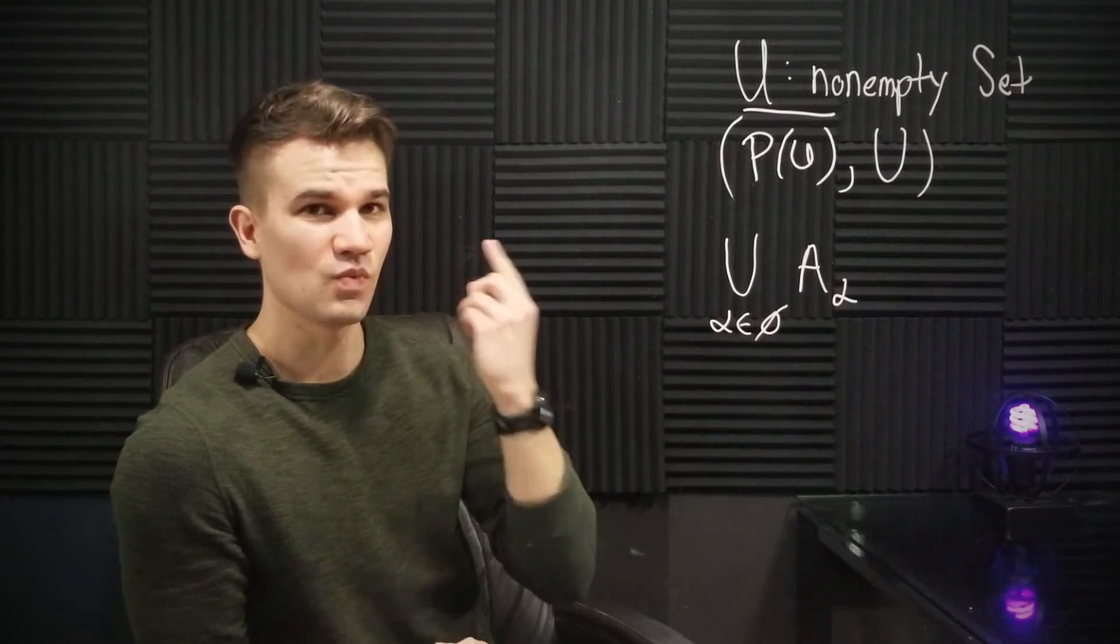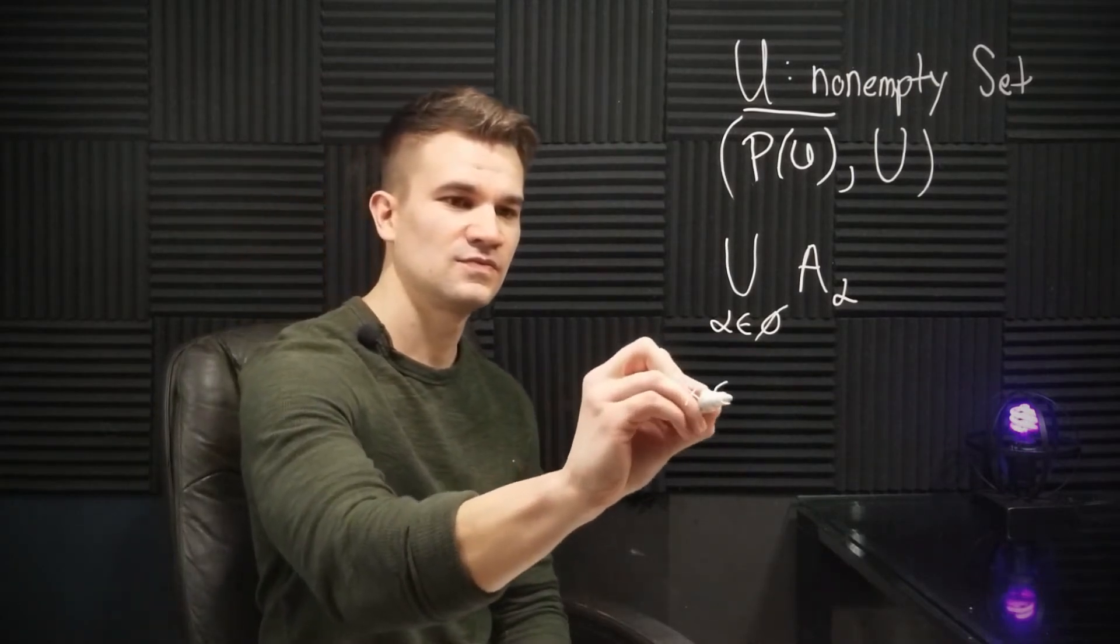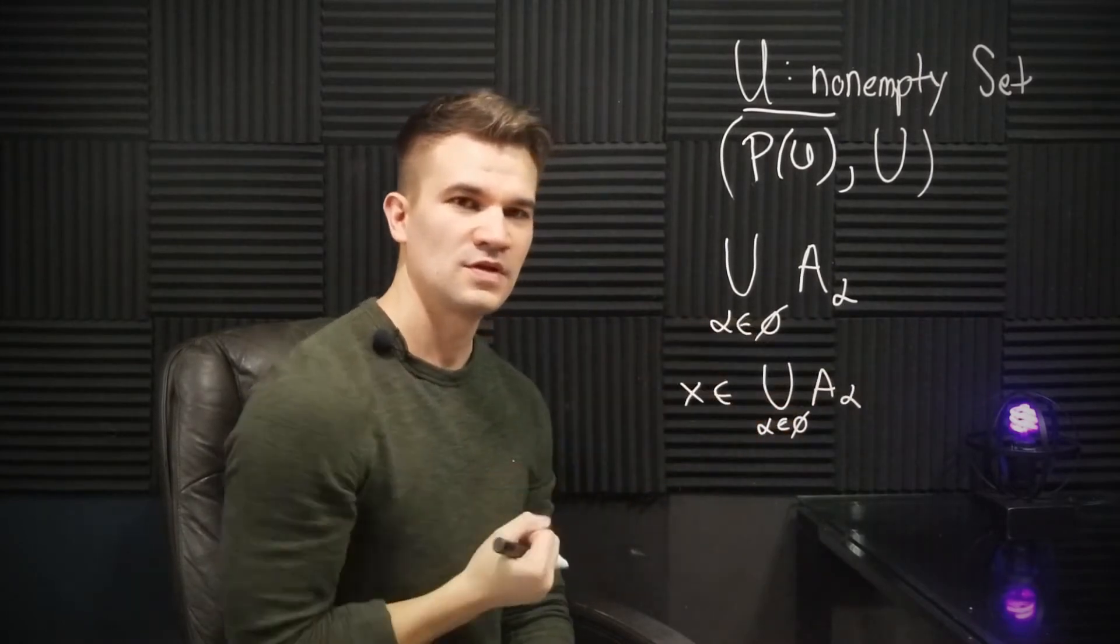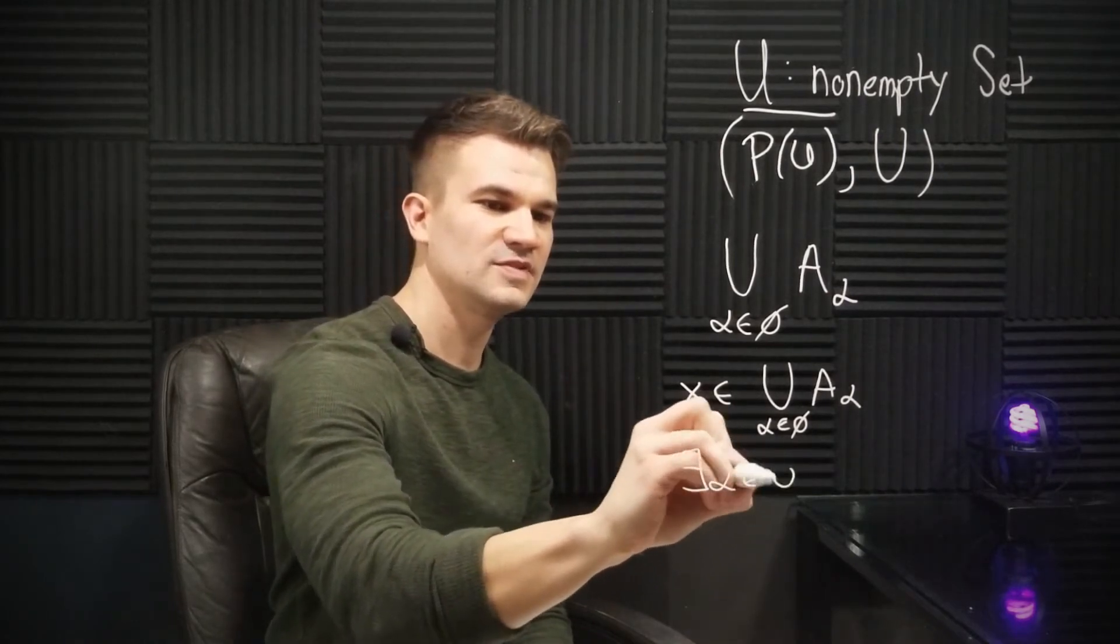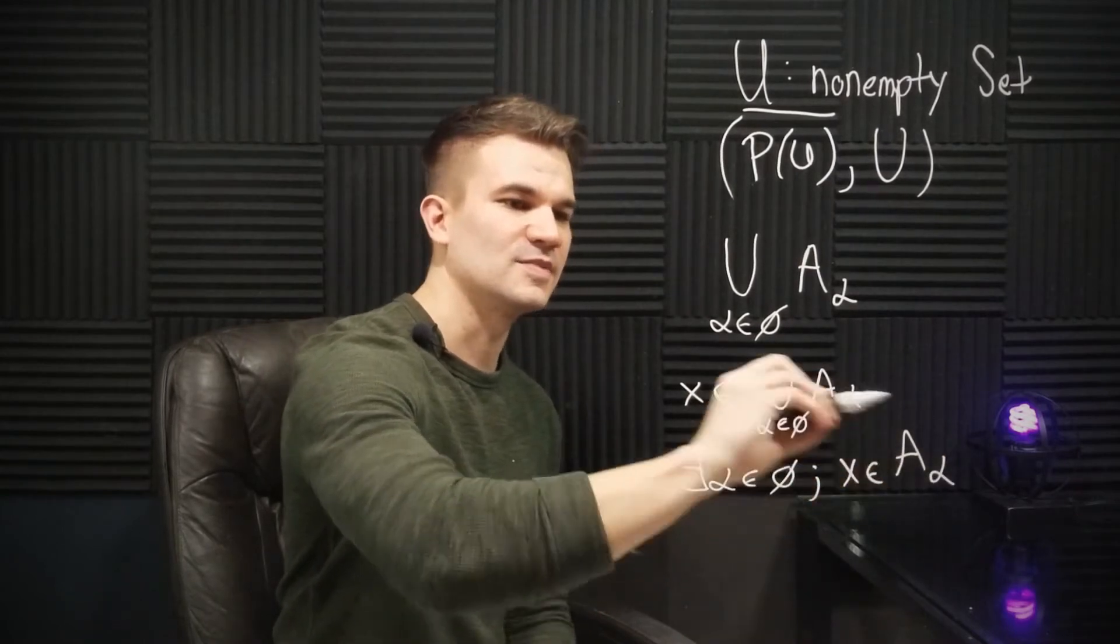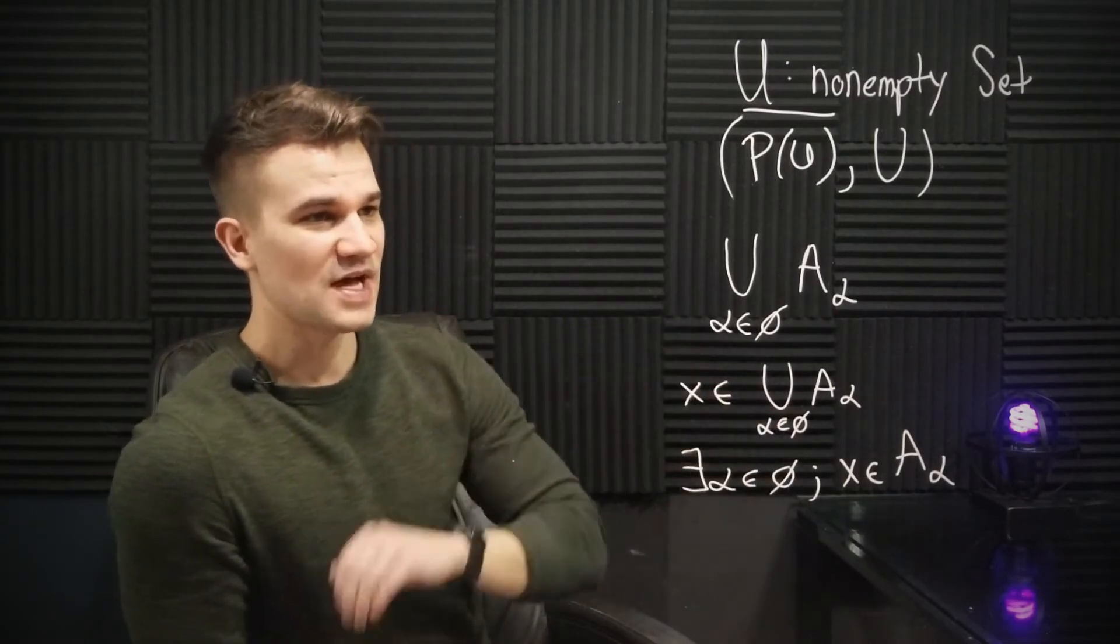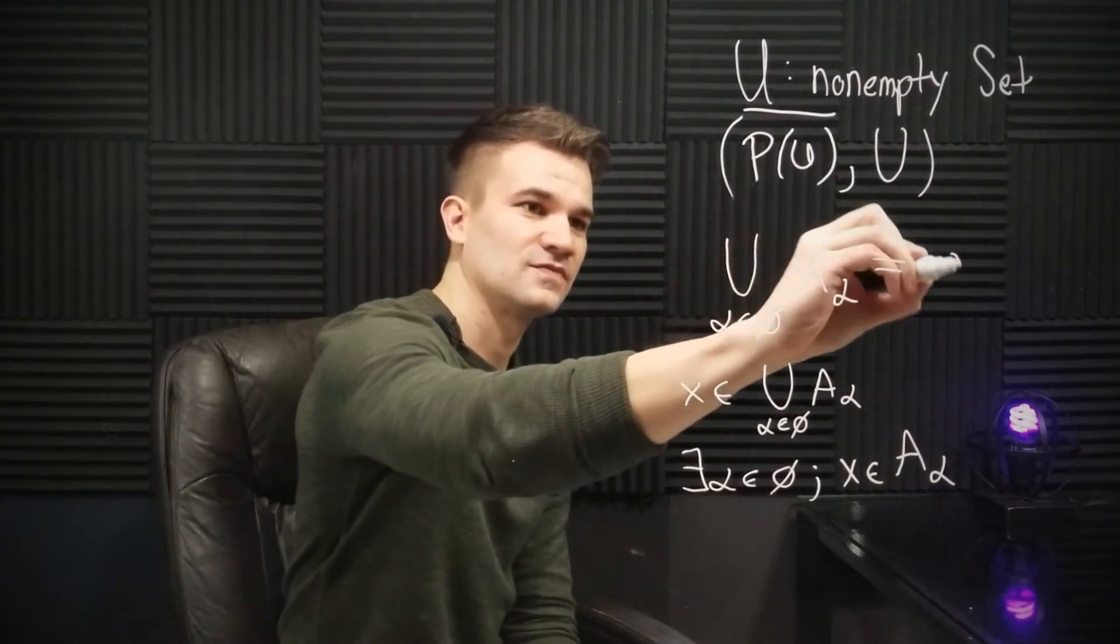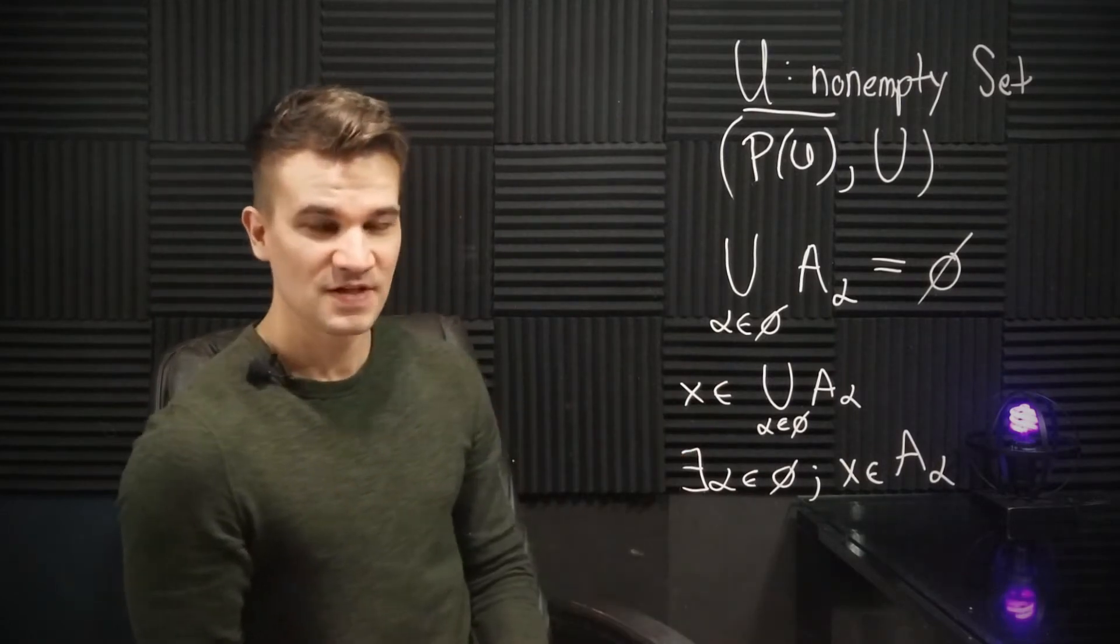In other words, X is in the union if and only if there exists an alpha in the empty set such that X is in A sub alpha. Clearly, this is false because alpha is not in the empty set. It's the empty set. So we can conclude that this union over an empty family of sets is the empty set. So the union of no sets is the empty set. This is again pretty intuitive.